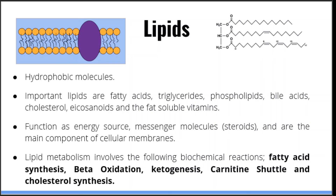Next, we'll talk about lipids. Lipids are defined as molecules which can dissolve in non-polar solvents, or simply substances that are hydrophobic. Lipids are a lot more variable in terms of physical structure than other biomolecules — they can exist as linear or ring-shaped molecules, range from only a few atoms to hundreds of atoms, and can include many different kinds of atoms. In the human body, lipids function as a source of energy, messenger molecules such as hormones or steroids, vitamins or cofactors required for some biochemical reactions, and an important component of the plasma membrane of all cells. Important types of lipid metabolism include fatty acid synthesis, beta-oxidation, ketogenesis, the carnitine shuttle system, and cholesterol synthesis.